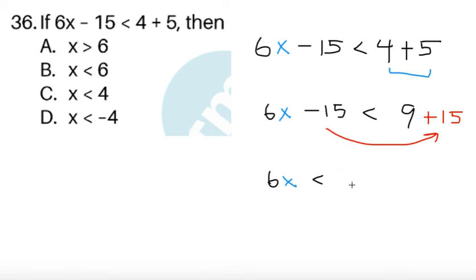So we're going to have 24 here. And then divide both sides by 6 to get the final answer of x is less than 24 divided by 6, that's equal to 4. So since we have x less than 4, we should have choice C.